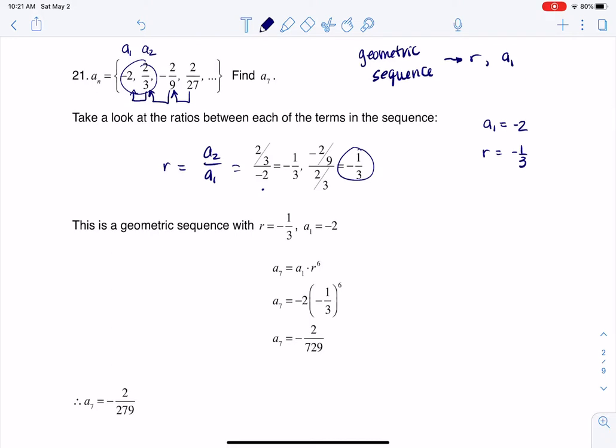And so as we move through that, we also have this general formula: a_n equals a_1 times r to the n minus 1. Well, that's great. I just want a_7, so I'm going to put a 7 here and a 7 here.